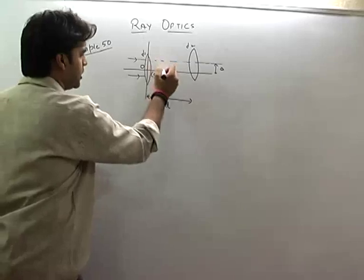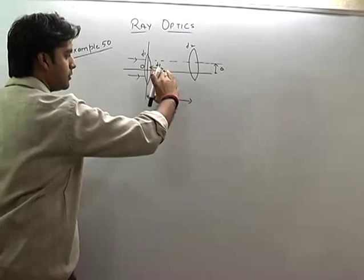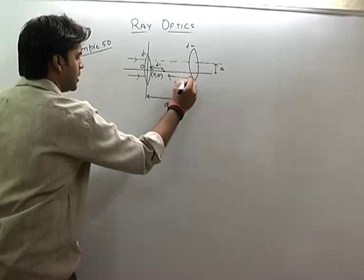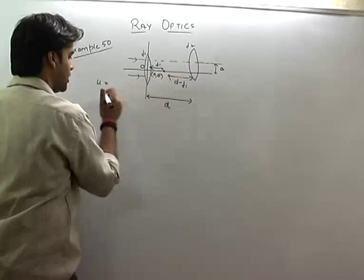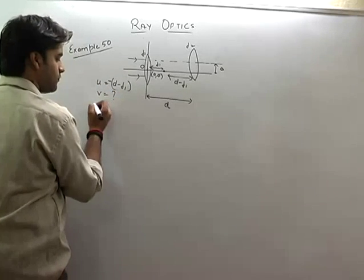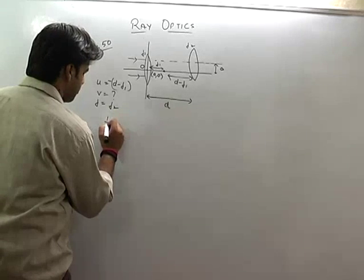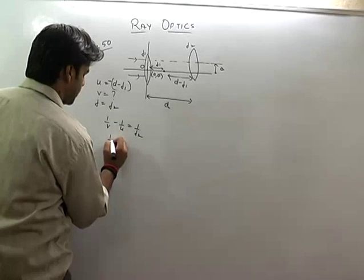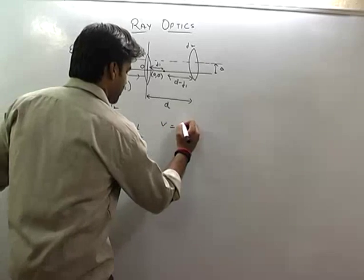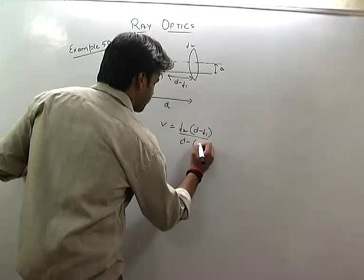We are going with the formula. Since rays are incident parallel from the left (coming from infinity), they will focus at distance f1 from the first lens. This focal point acts as the object for the second lens, so u = -(d - f1) = f1 - d. Using the lens formula with focal length f2, V comes out to be f2(d - f1) / (d - f1 + f2).